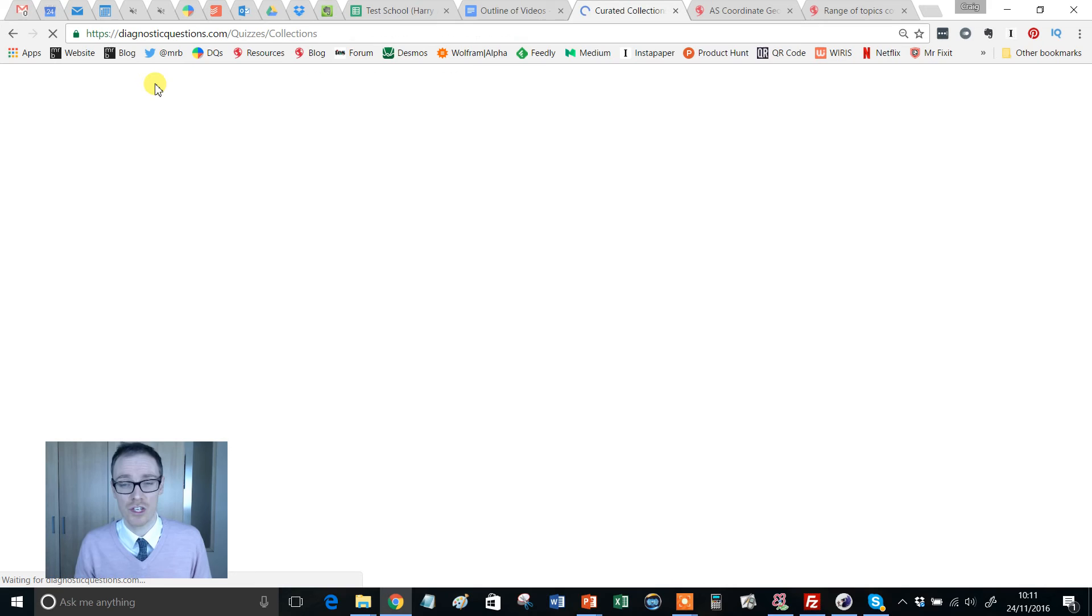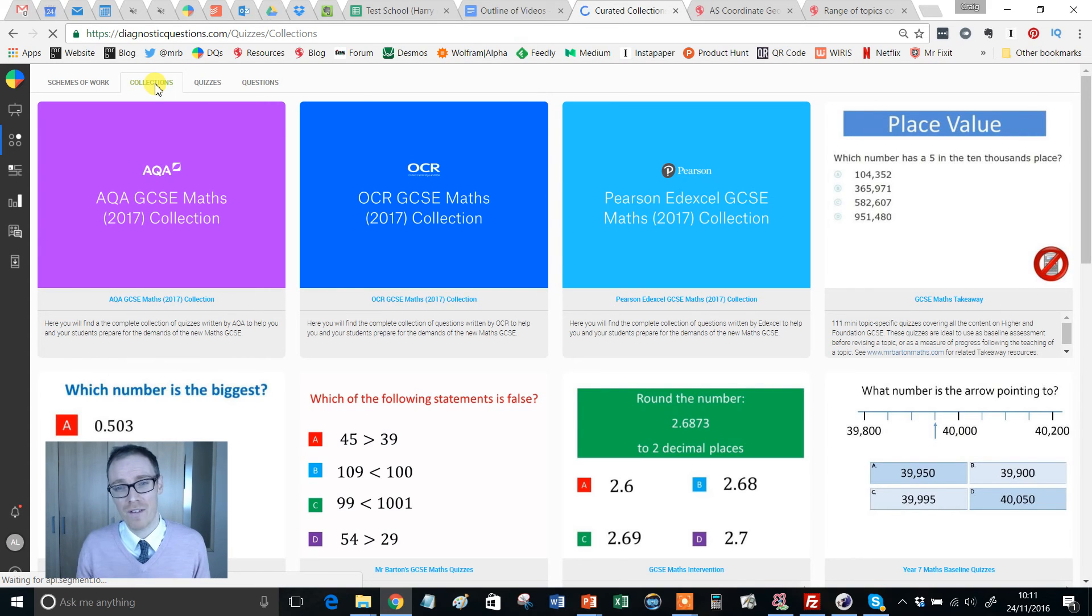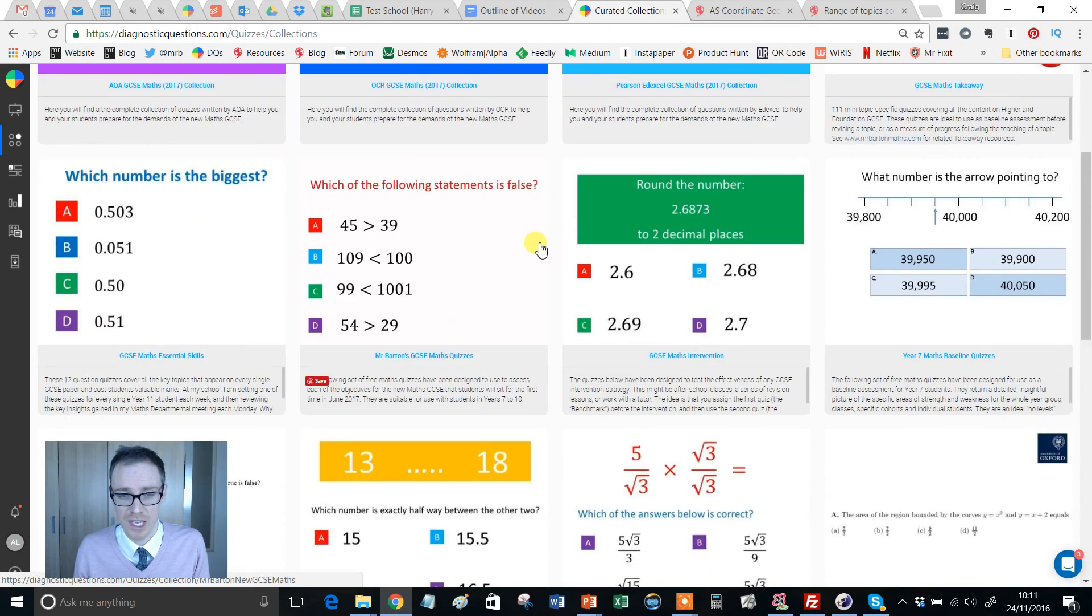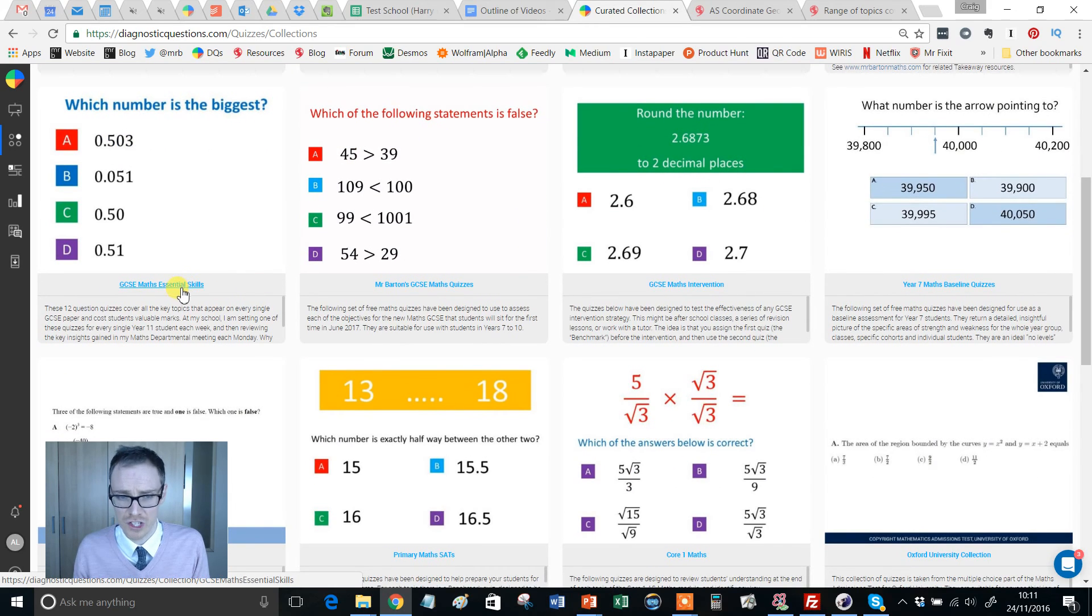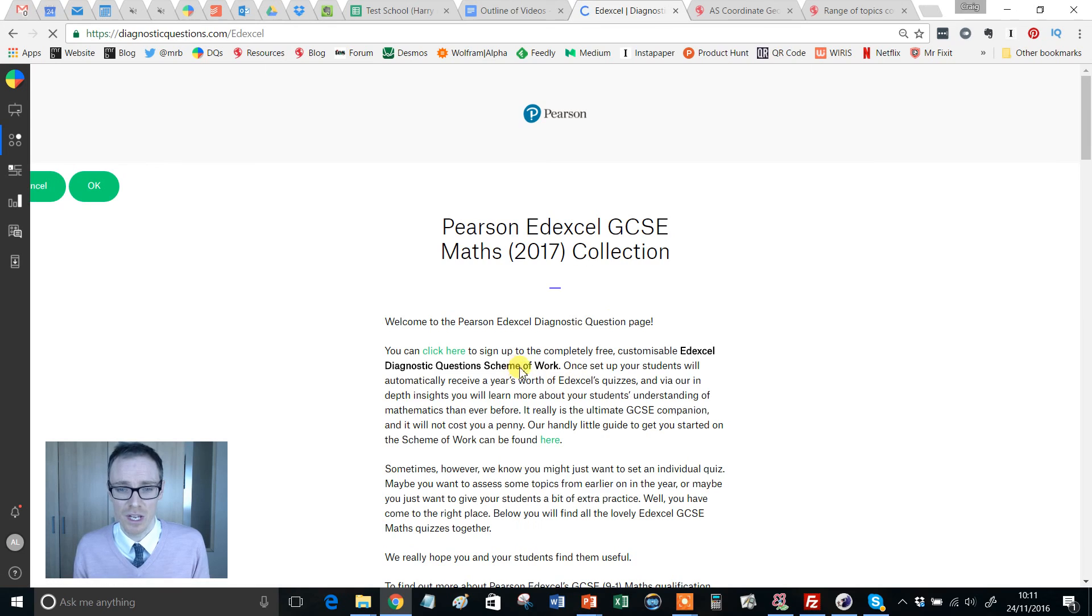So that's one way of searching for questions. Another way that I'm a big fan of is to look at the collections page. Now the collections page is my way of assembling all my favorite quizzes and collections together. So you'll see here that we've got all the GCSE ones for the brand new GCSE, and then we've got all different ones: GCSE essential skills, all that kind of stuff.